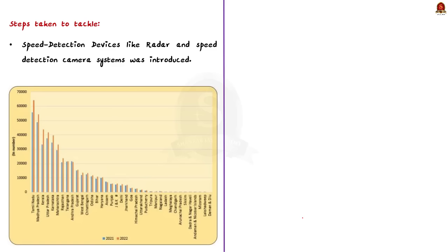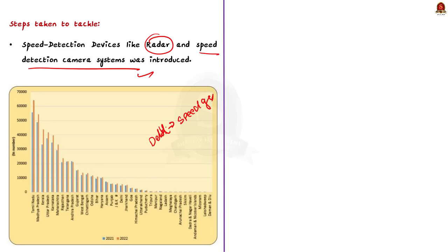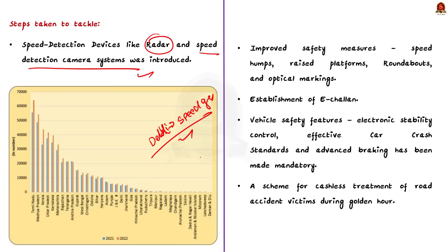Moving to the second part — steps to tackle road accidents. Firstly, to monitor over-speeding, speed detection devices like radar and speed detection camera systems can be introduced. For example, digital speed cameras have been implemented in Chandigarh, and speed cameras and radar guns have been introduced in New Delhi. Radar guns are handheld devices used by traffic police to estimate the speed of passing vehicles. Secondly, improved safety features like speed bumps, raised platforms, roundabouts and optical markings can be introduced.